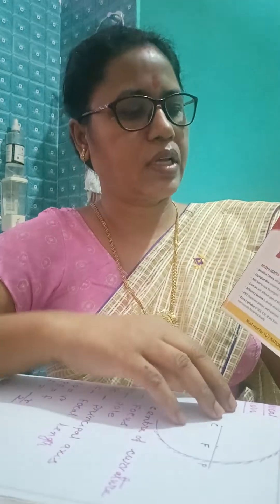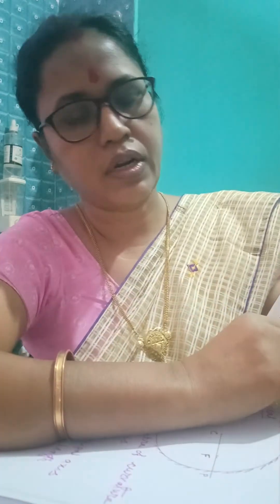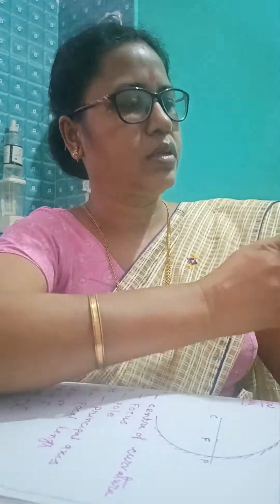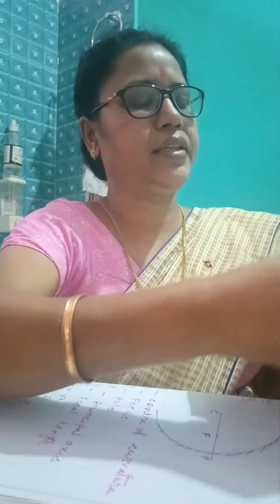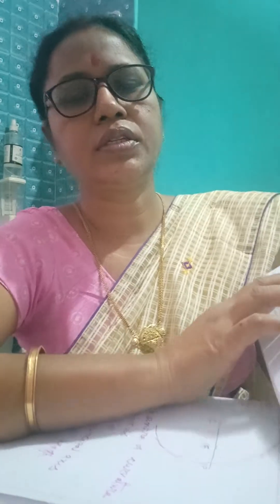Hi everyone. Today our lesson is Science Olympiad Preparation for Class 7. Our lesson is Light and our unit is Spherical Mirrors.